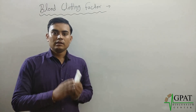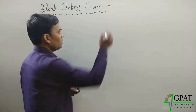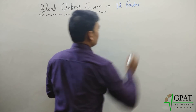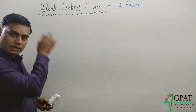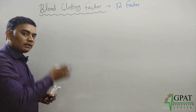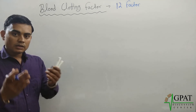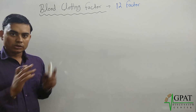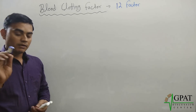These 12 total factors help in blood clotting. They are numbered 1, 2, 3, 4 and so on, along with their names. However, it is very confusing to remember all the factors in sequence because they are known by their numbers. Here I am going to give a trick to remember these clotting factors.